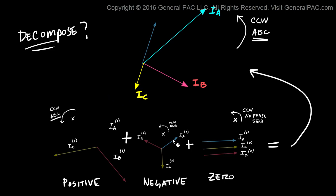Now I add our negative sequence phasor A and I add that to our zero sequence phasor A. Look what happens. What we get is our original phasor.